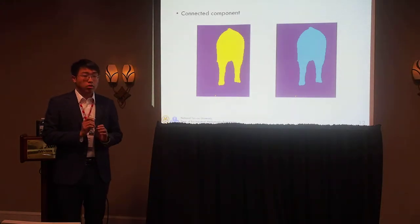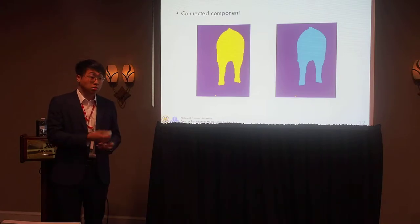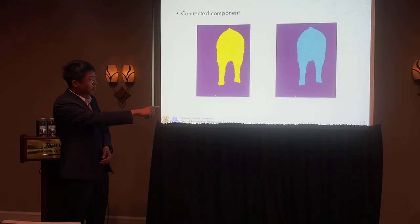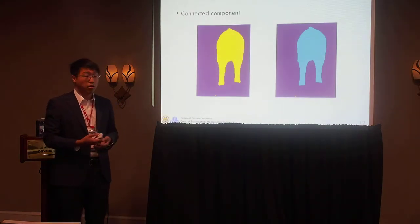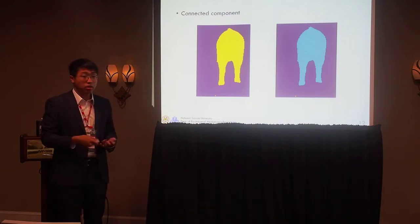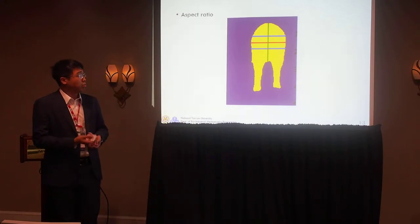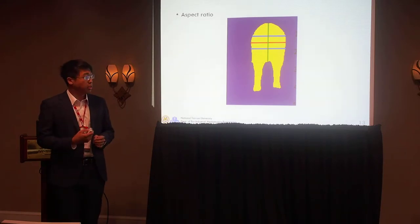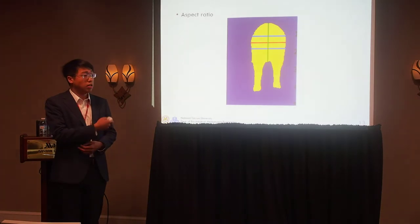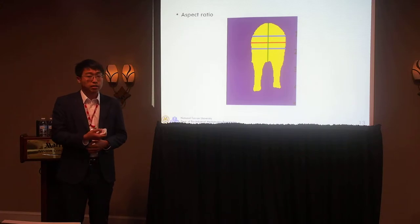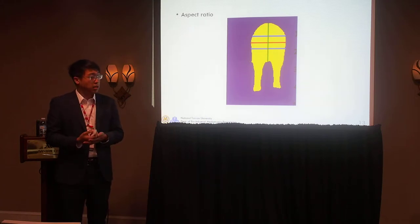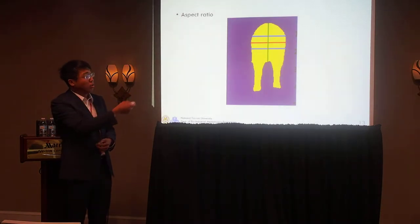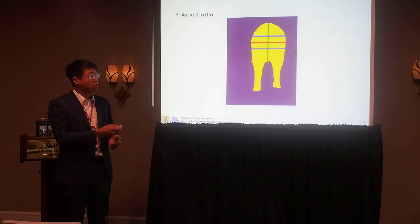First, I use connected components to choose the biggest one as the sow body. Some sow body images include the tail, so I remove the tail using a threshold. After cutting the tail, I measure the aspect ratio. The red line is the widest width of the pig body. The green line, close to the center of the red line, serves as the body length. The blue lines are called approximate widths. The final aspect ratio is the ratio of the average of these blue lines and the red line, to the green line — the body length.